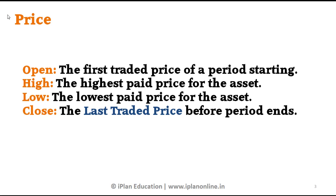So let's take an example. A script traded first at 105, went to a high of 110, then went down to 102, and closed at 107. So the open price was 105, the high was 110 — meaning somebody paid the highest amount of 110. The low was 102 — there was no buyer so the seller had to reduce the price to 102. Then buyers returned and the script closed at 107.